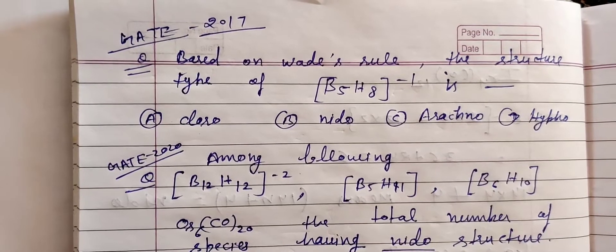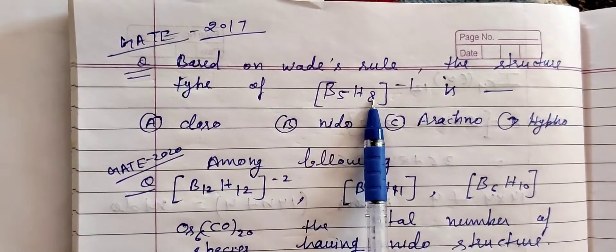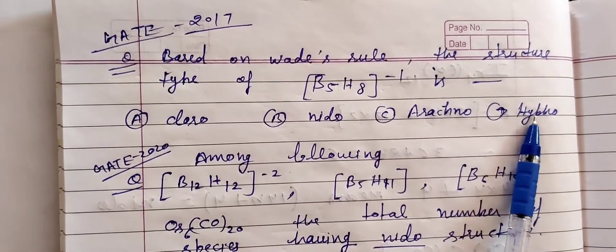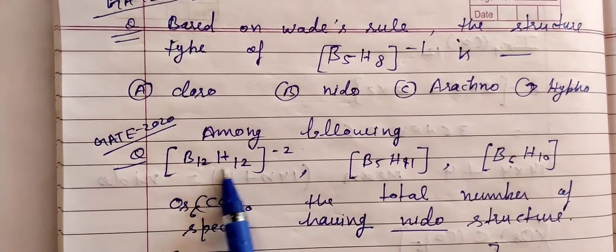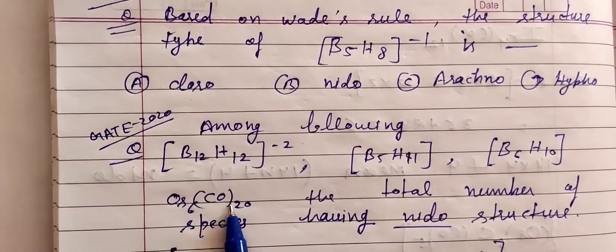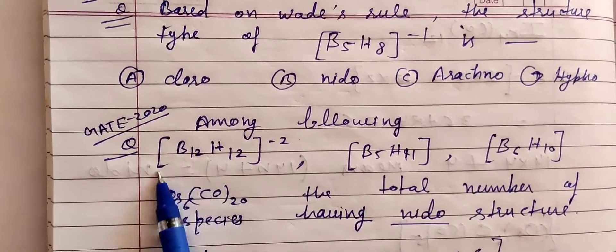Welcome to my YouTube channel. In today's video, we are going to discuss a few questions from GATE exam 2017 and 2020 which are based on types of boranes. The first question is based on Wade's rule: the structure type of B5H8⁻¹ — options are closo, nido, arachno, and hypo. The second question asks: among B12H12²⁻, B5H11, B6H10, Os6(CO)20 — find the total number of species having nido structure.